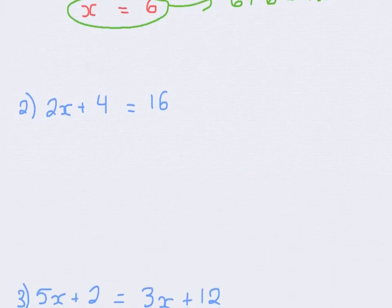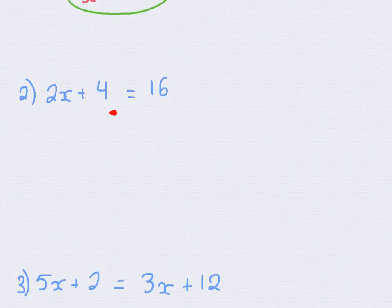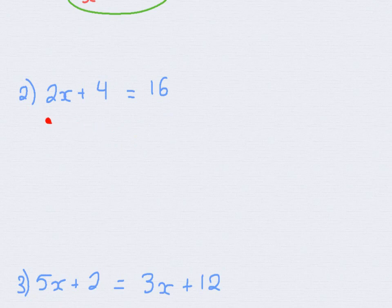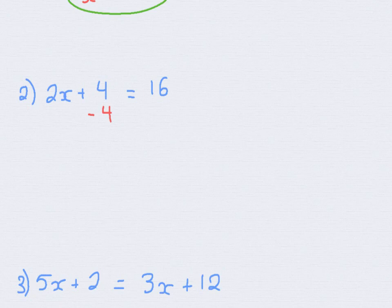Let's do another one that requires a bit more steps. Here I have 2x plus 4 is equal to 16. Again, we do the inverse of BEMDAS, and we remember that whatever we do to one side, we do to the other. So instead of starting with multiplication and division, we are going to start with the addition and subtraction part. Our x is being bounded by a 2 that's multiplied to it, but also a plus 4. So we are going to look at this plus 4 and get rid of it. To make 4 equal to 0, we have to subtract 4, and we subtract 4 on the other side as well.